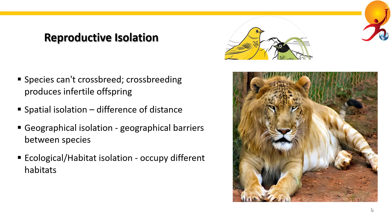Ecological or habitat isolation — in this case, the populations are not separated by great distances but occupy different habitats in the same area. Brown bears and polar bears are a good example of habitat isolation.